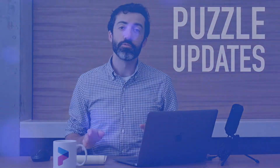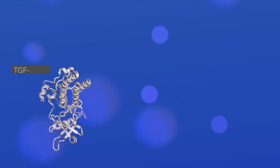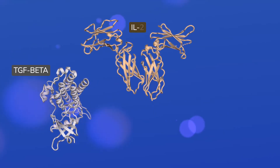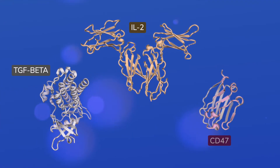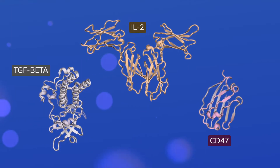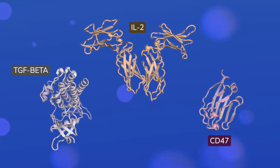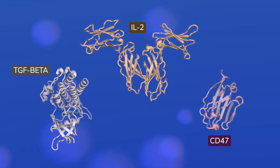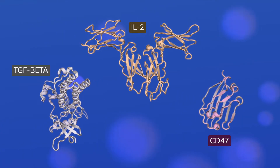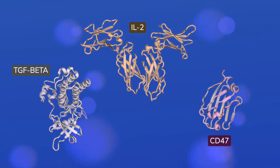And speaking of science puzzles, that brings us to this month's Puzzle Updates. In September, we saw lots of binder design puzzles for targets like TGF-beta receptor, IL-2 receptor, and CD47. These are all proteins that play crucial roles in the human immune system. If we could create binders that target these immune proteins, those binders could become new drugs for cancer or autoimmune diseases.